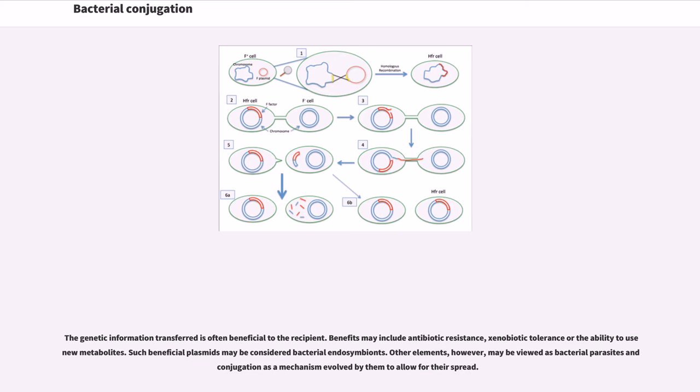The genetic information transferred is often beneficial to the recipient. Benefits may include antibiotic resistance, xenobiotic tolerance, or the ability to use new metabolites. Such beneficial plasmids may be considered bacterial endosymbionts.